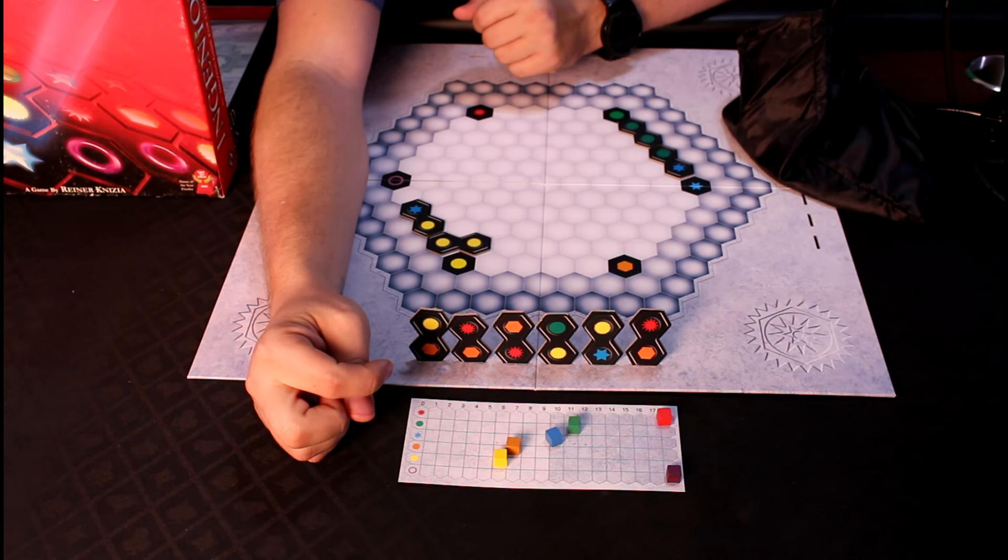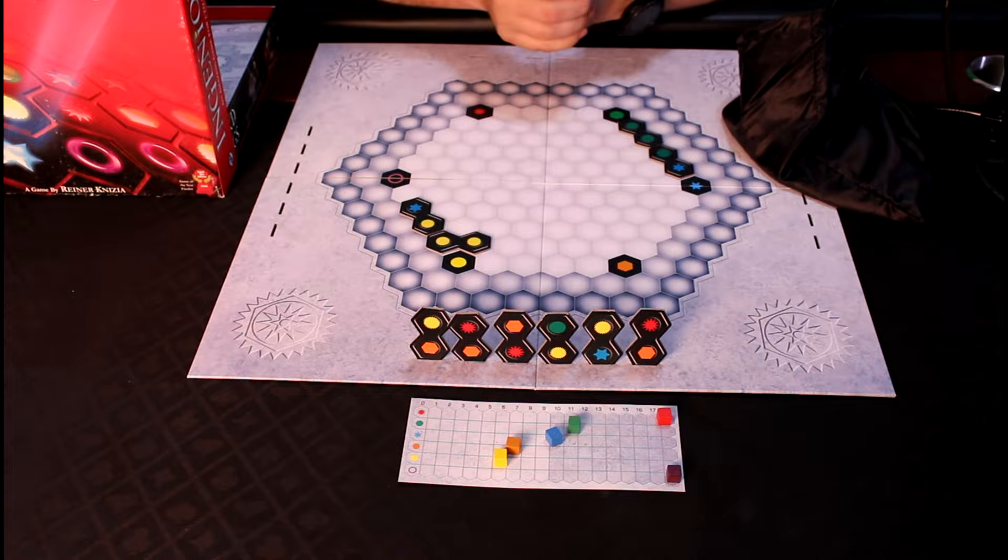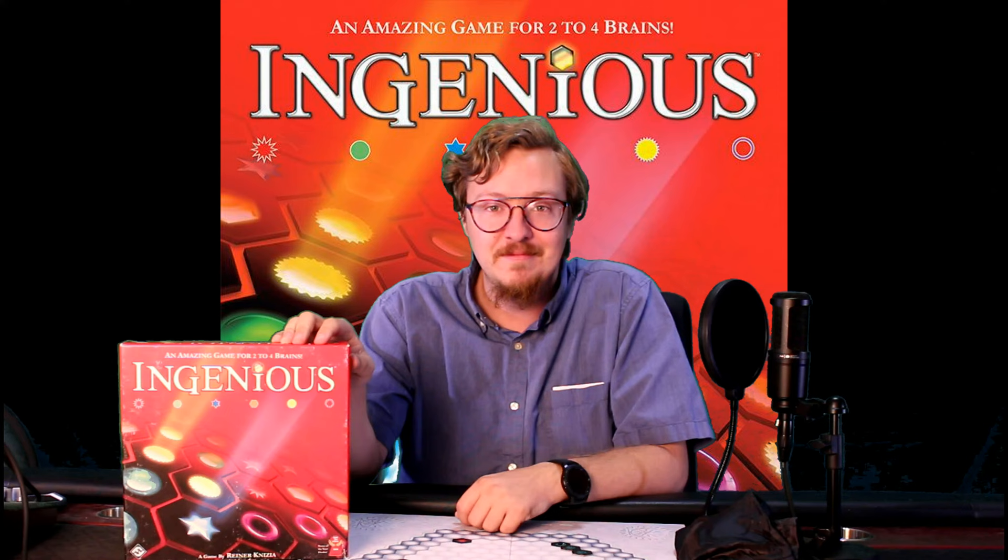In this example, since yellow is the shortest one, I have six points. The player with the highest score is the winner. And that's how you play Ingenious.